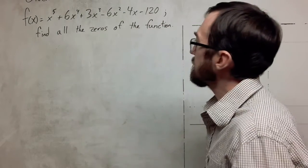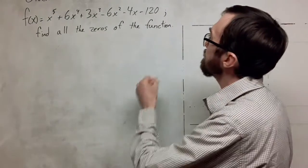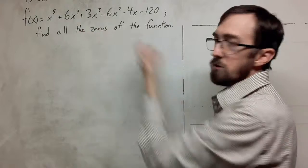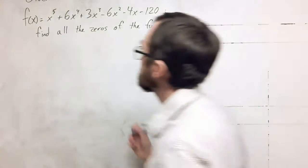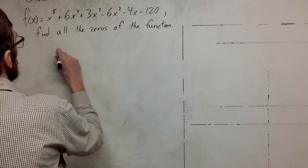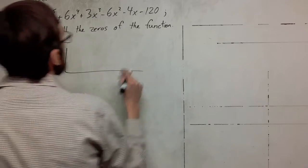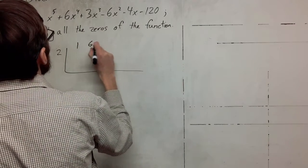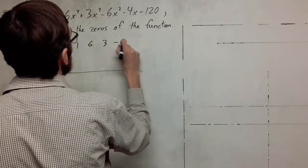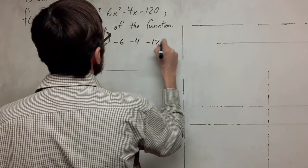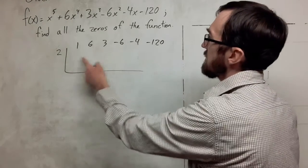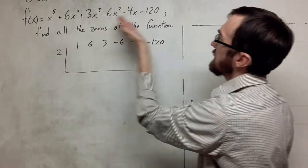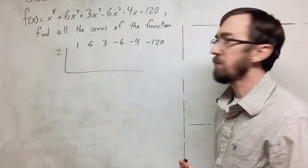I'm going to use synthetic division where I can to start out with. And as a starting place, I'm going to look for factors of 120 to try to divide into this. Since this is even, I'm going to start with a 2, and we want all of our coefficients. We do not have any x's that are missing. We start at 5 and we count down to 0, so we are good with that.